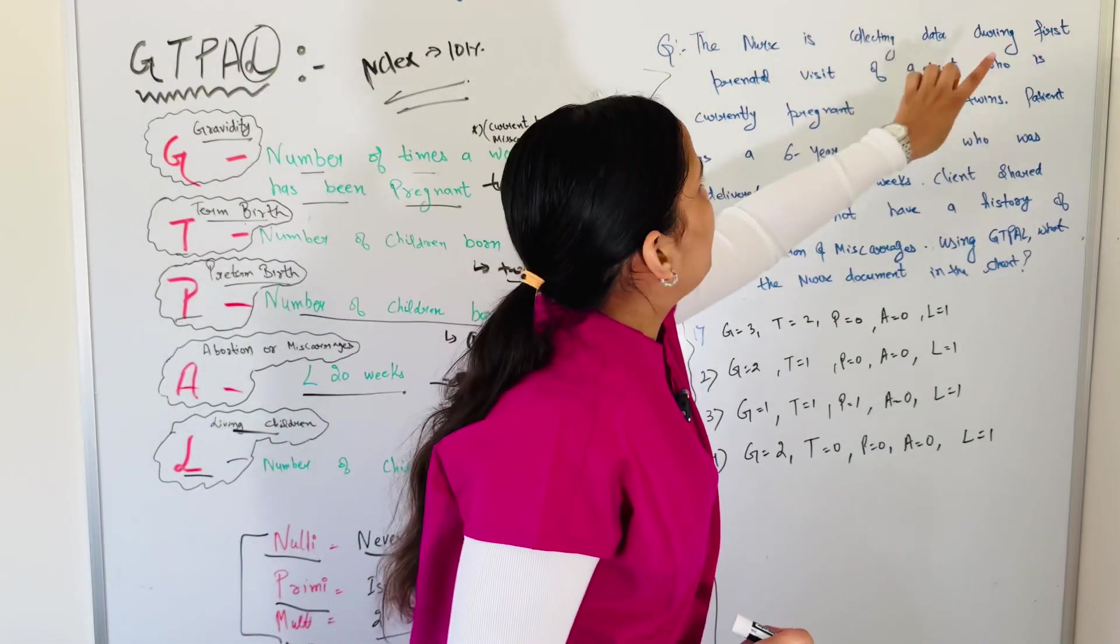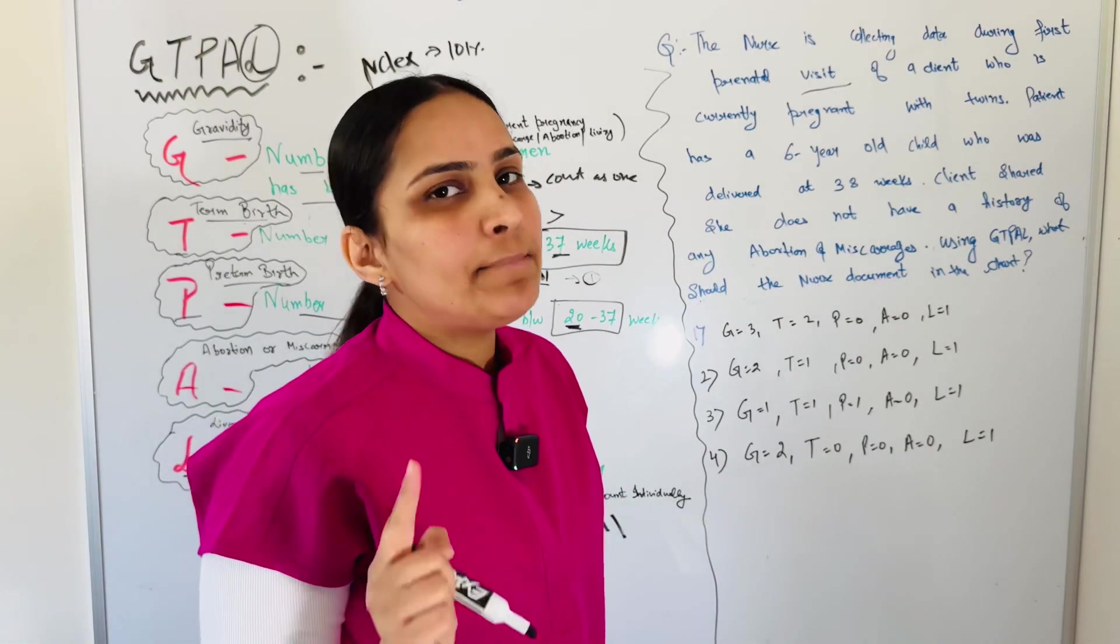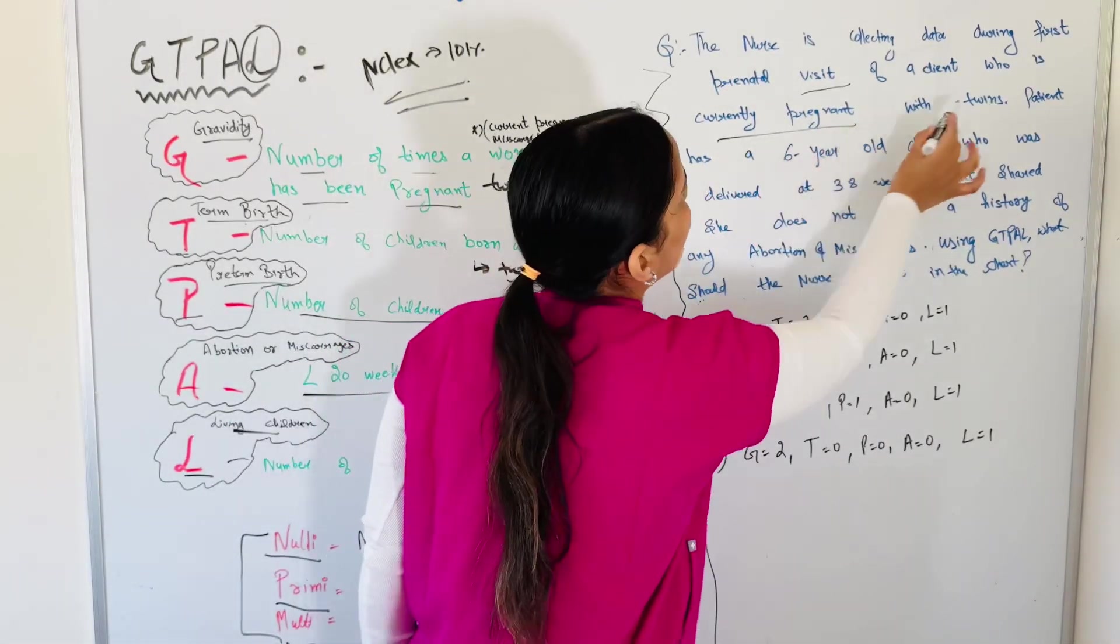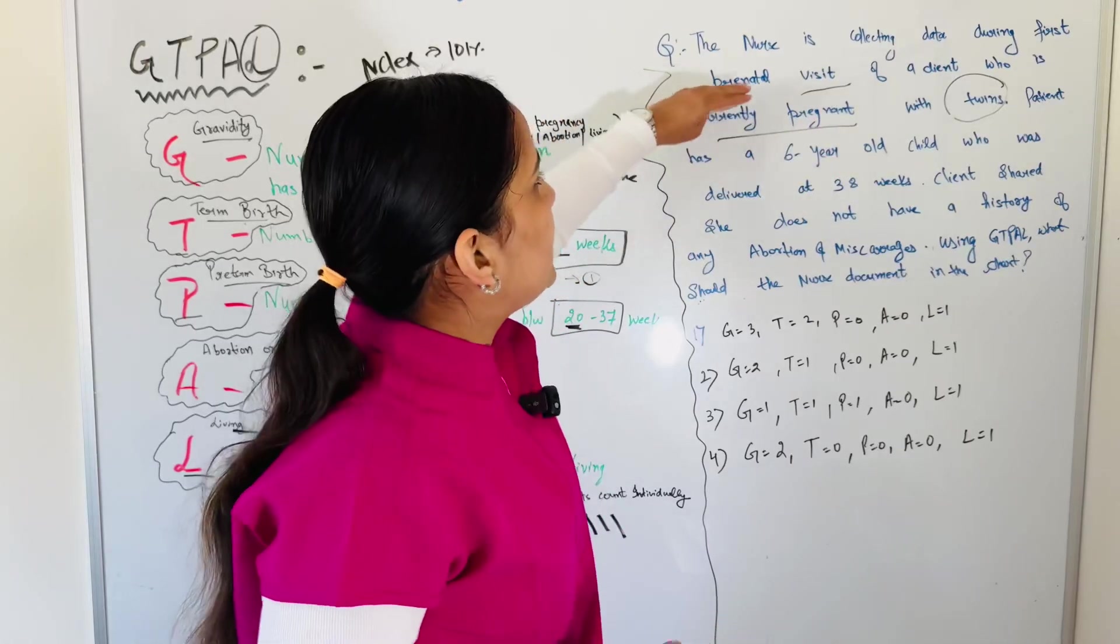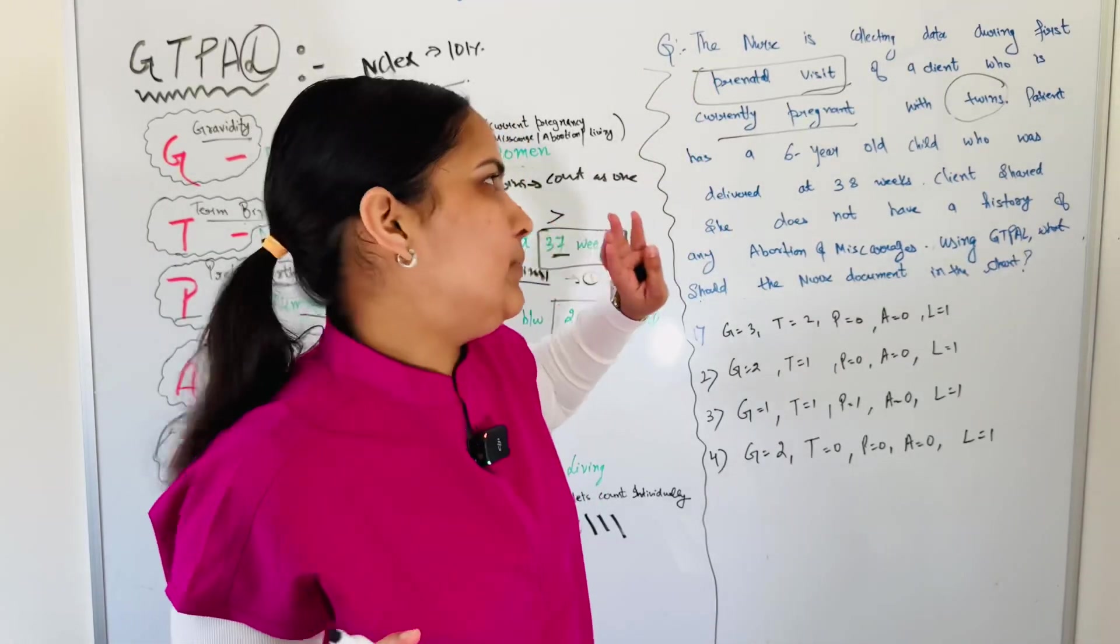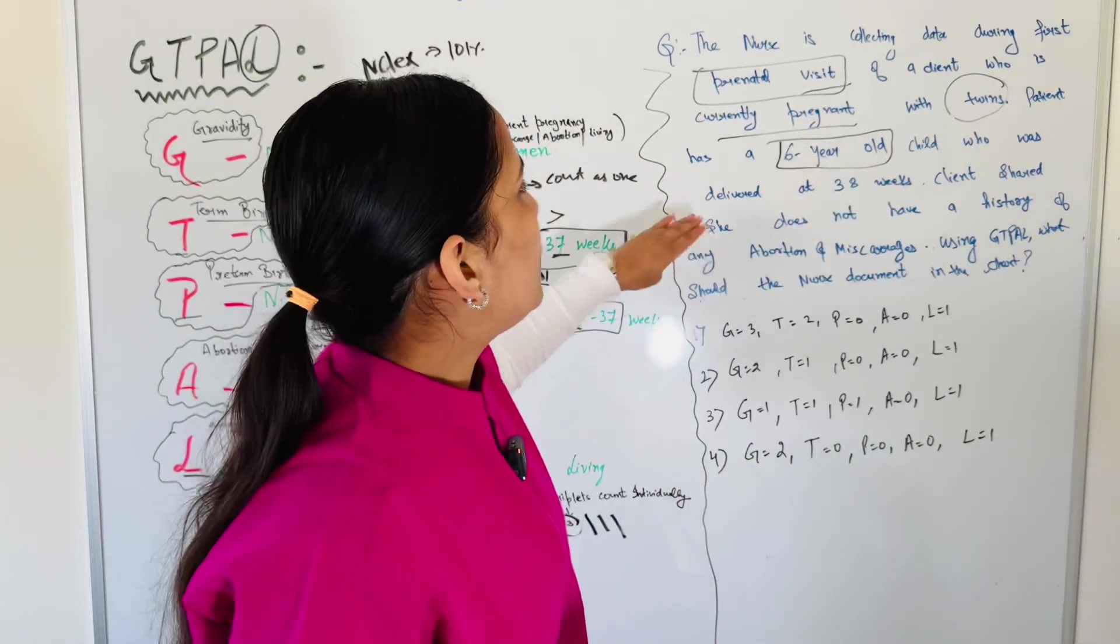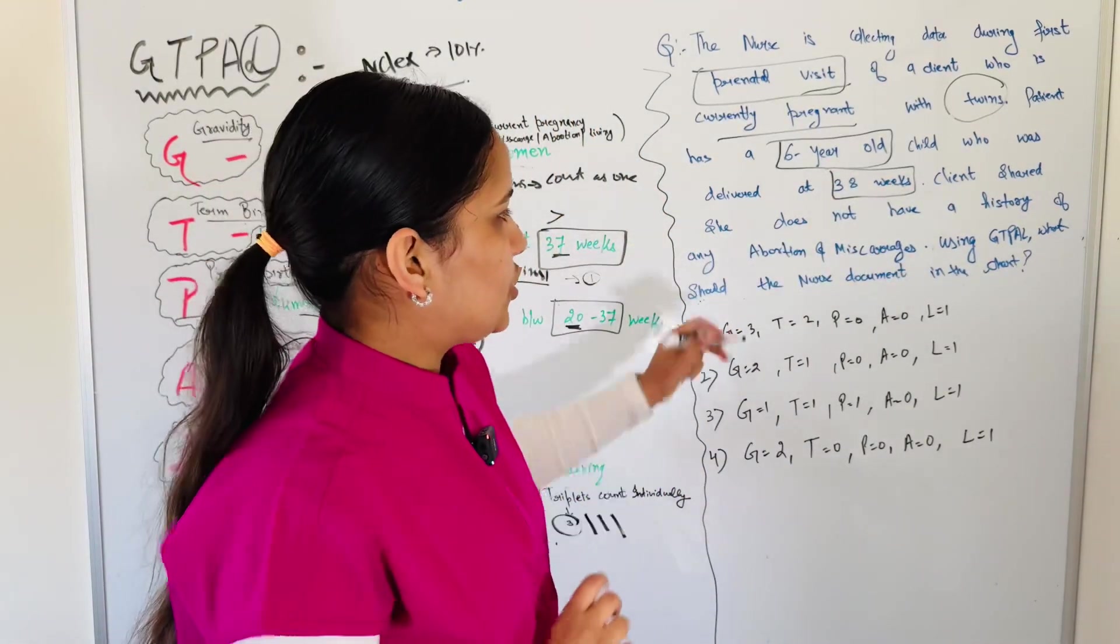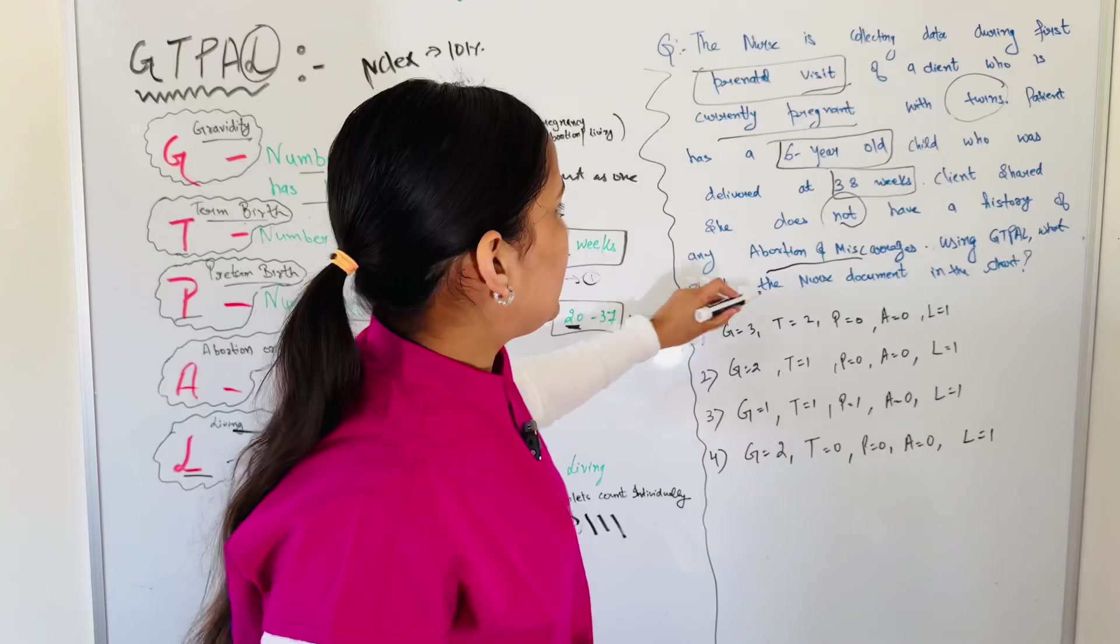Let's see the question: The nurse is collecting data during first prenatal visit. First prenatal visit meaning woman is currently pregnant. Let's see what information is given next: who is currently pregnant with twins? Even if they hadn't given this information, we would have solved this question because we know prenatal visit, we have to count this in G. Patient has a six-year-old child who was delivered at 38 weeks. Client shared she does not have a history of any abortion or miscarriage, no history. GTPAL, what should the nurse document in the chart?